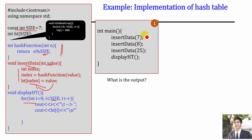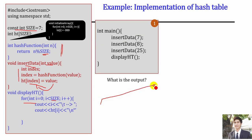This is how we implement it — we can insert some data for testing and then display our hash table. To better understand, we will take a look at a deeper implementation in code. But first I would like to explain a bit more — for example, if we input number 7, since our array size is 7, let's visualize a box with 7 slots.